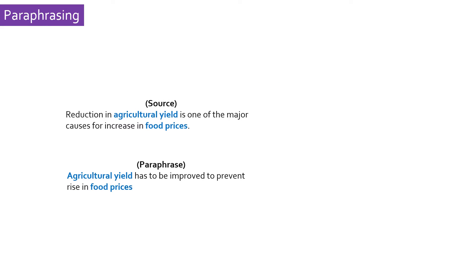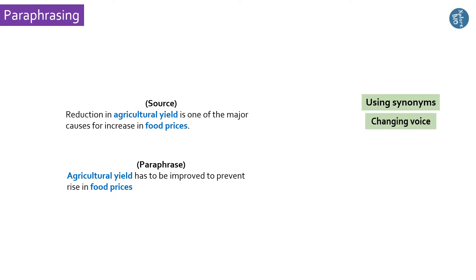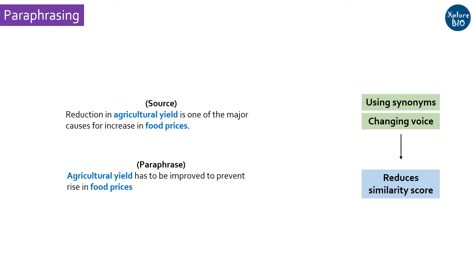Rephrasing a sentence by choosing alternate versions of words or changing the voice of a sentence are most commonly done to reduce the similarity of a manuscript with the existing literature. This is termed as paraphrasing.